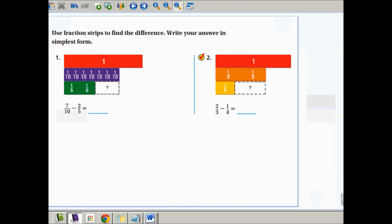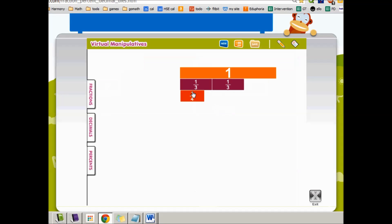Here we have 2 thirds minus 1 fourth. And they model this for us. They have one whole, two 1 third pieces, and then we subtract 1 fourths. We put it on the bottom, and then we figure out what fits in this space here. So 2 thirds minus 1 fourth. So I have 2 thirds here and 1 fourth here, and I need to figure out what goes in this space.